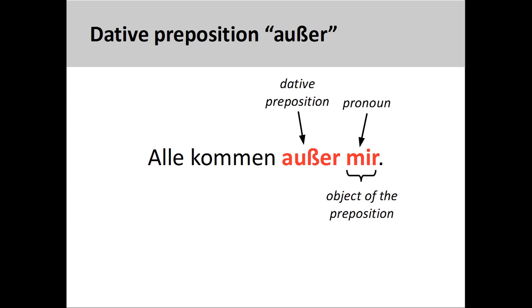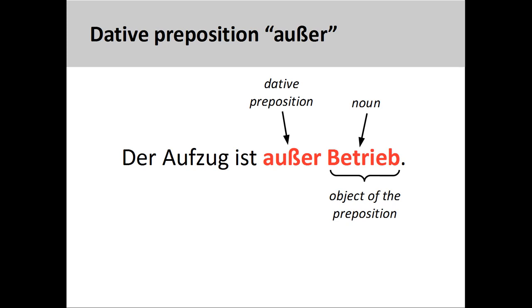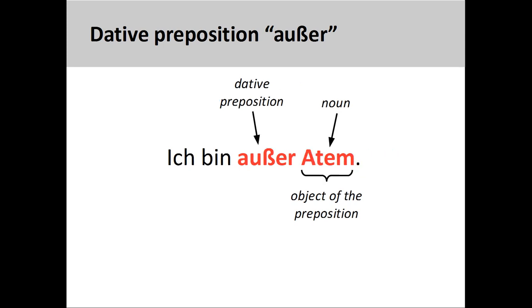The preposition 'Außer' can be used to express exclusion or an exception, as in 'Alle kommen außer mir' — everyone is coming except me. The preposition can also be used idiomatically to express the concept of being out of something. For example, 'Der Aufzug ist außer Betrieb' — the elevator is out of order — and 'Ich bin außer Atem' — I am out of breath.